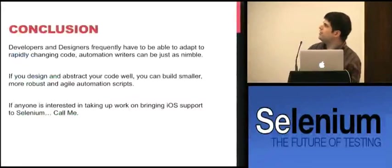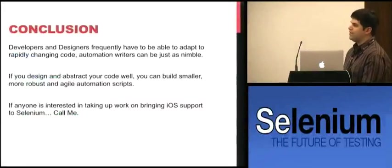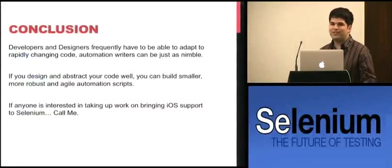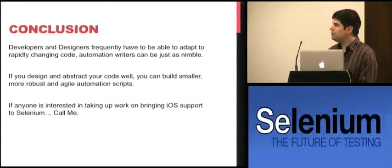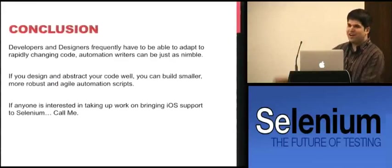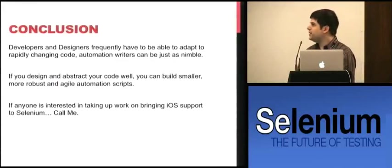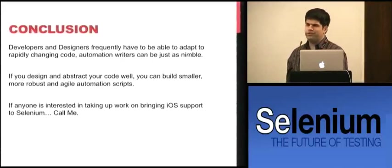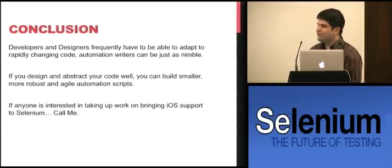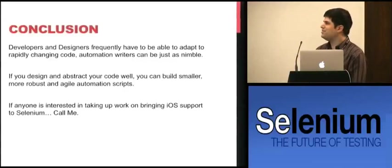In conclusion, developers and designers frequently have to adapt to rapidly changing code — so why can't automation writers be just as nimble? If you design and abstract your code well, you'll build smaller, more robust, more agile automation. That iOS thing is really cool — it doesn't require any integration, you don't have to build anything into your app. You can use any app as long as you can run it in the simulator. If anyone's interested in bringing that into Selenium, give me a call.